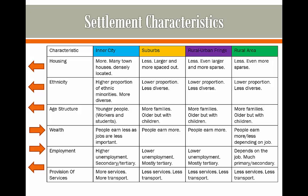Age structure also differs between the inner city and all the other settlement types. The younger people tend to live in the inner city because they are students and there are more jobs there for them. In the suburbs, there tends to be more families that are older and also have children, because they want to have more space for the children to grow up in, so they move out and get a house there.